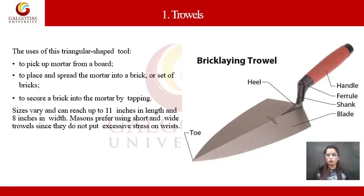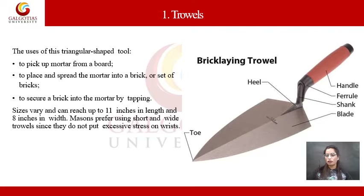Let's start with the first masonry tool: the trowel. This triangular shaped tool is used to pick up mortar from a board, place and spread the mortar onto a brick or set of bricks, and to secure a brick into the mortar by tapping. Size can vary and can reach up to 11 inches in length and 8 inches in width. In this image you can see the brick laying trowel with its different parts: the heel, toe, handle, ferrule, shank, and blade. This is a very commonly used tool for brick masonry.